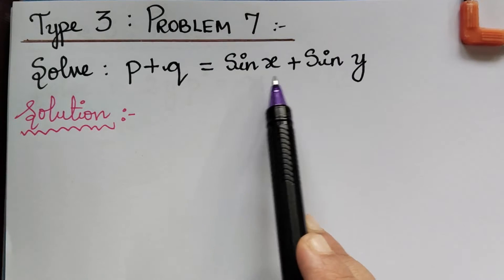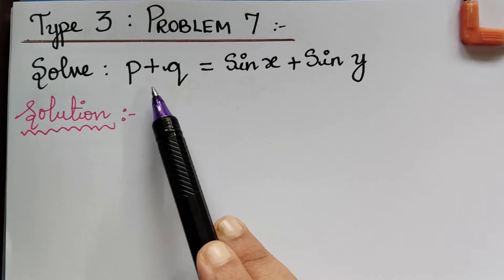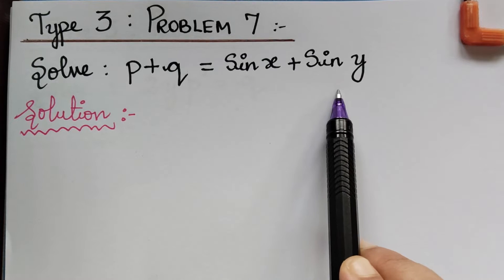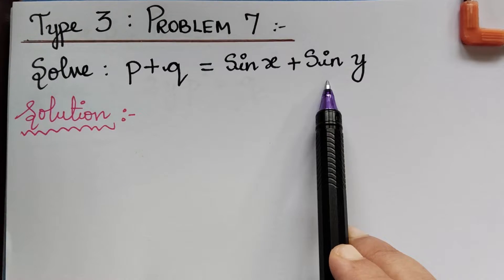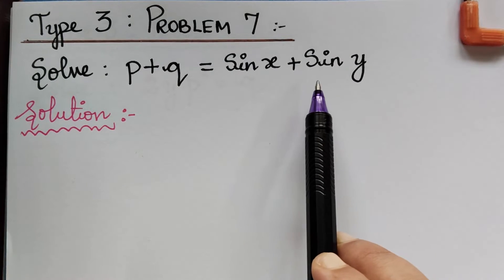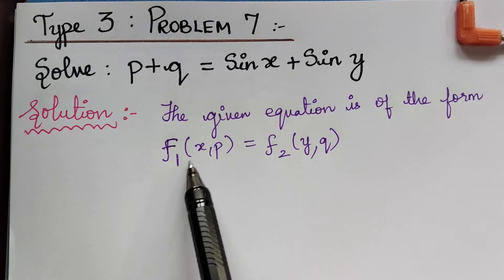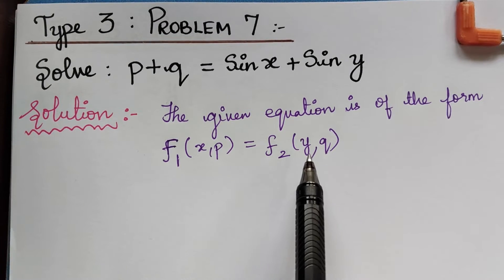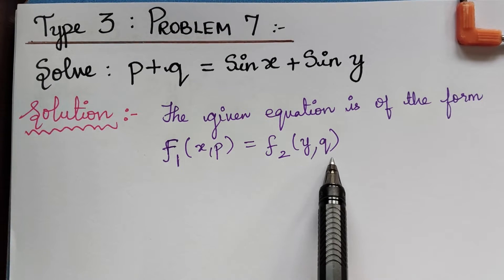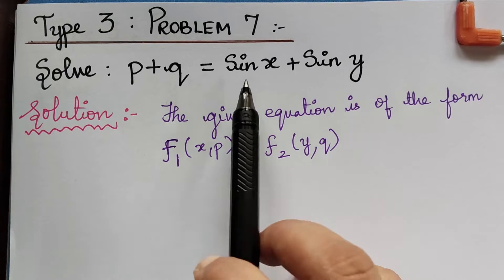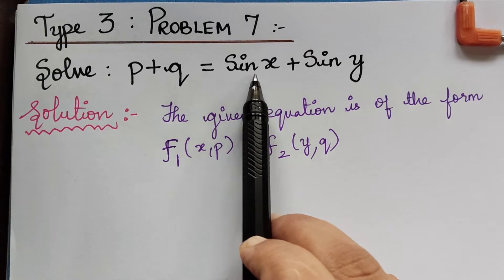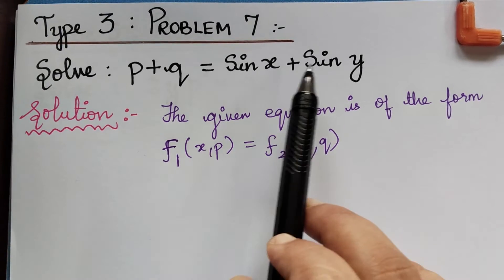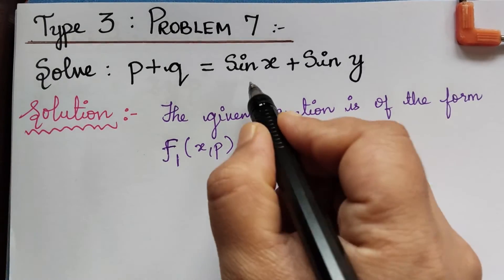We see that z is not present in this given equation. If z is not present, the given equation is of the standard form f1 of x comma p is equal to f2 of y comma q. In that case, we have to gather the x and p on one side and y and q on the other side.